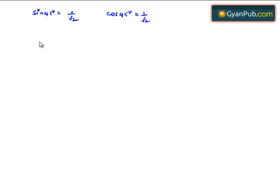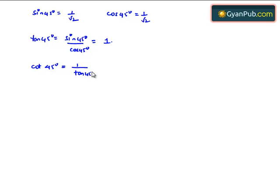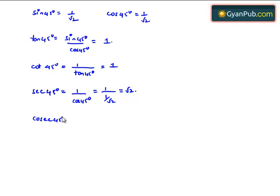From this, tan 45 degrees is equal to sin 45 degrees by cos 45 degrees, which is 1 by root 2 divided by 1 by root 2, that is 1. Similarly, cot 45 degrees is the reciprocal of tan 45 degrees, which is 1 by 1, that is 1. Secant 45 degrees is equal to 1 divided by 1 by root 2, which equals root 2. And cosecant 45 degrees is equal to 1 by sin 45 degrees, that is 1 divided by 1 by root 2, which equals root 2. Therefore, these are all the trigonometric ratios of angle 45 degrees.